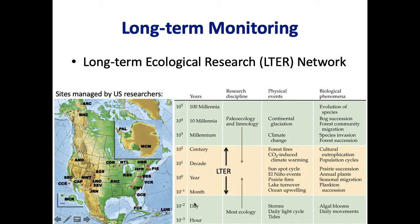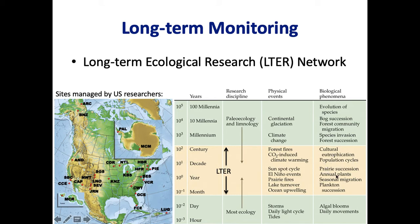Different scales are important for different types of ecology. Most ecology looks at changes in days to months. LTER sites aim to collect data over years, decades, and potentially even centuries. This way they're able to look at things like eutrophication, population cycles, succession, and migration.